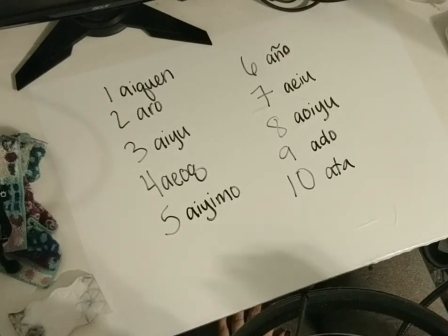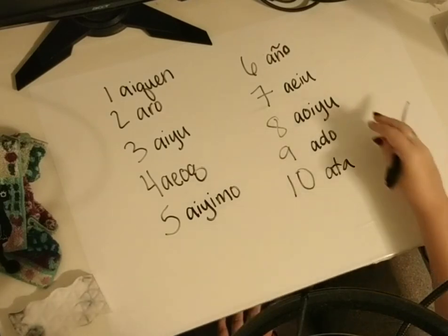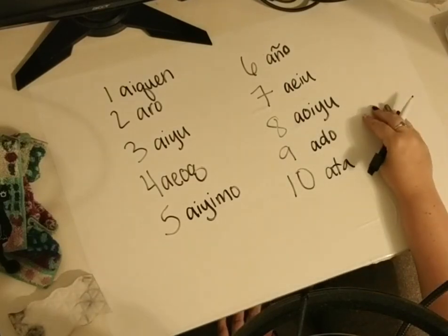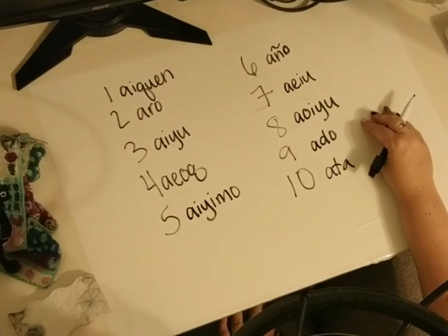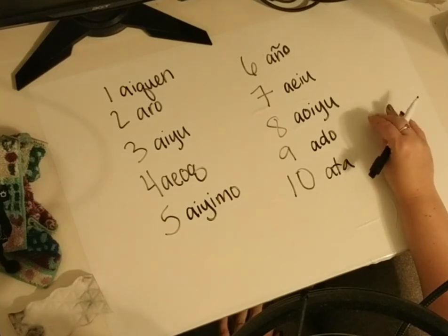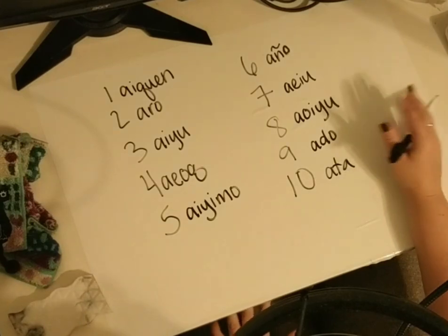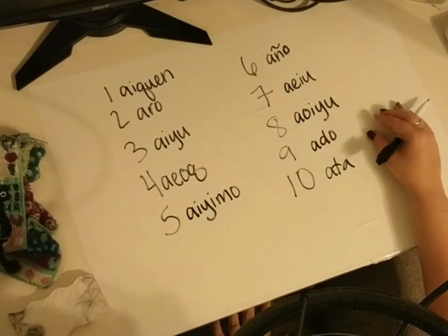I love that in number systems it seems to happen every time — there'll be a number that's super complicated and hard to say, or weirdly spelled, and then the next number is super simple. I mean, just look at the English word 'eight.'